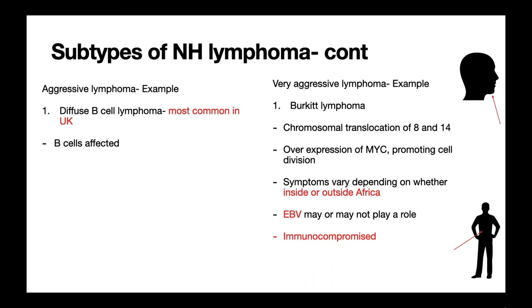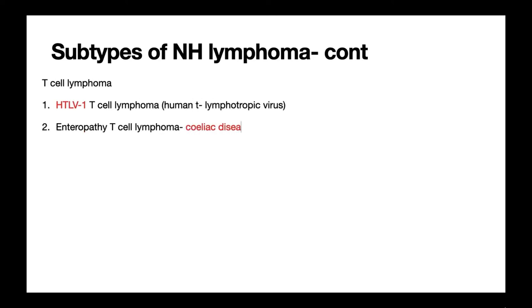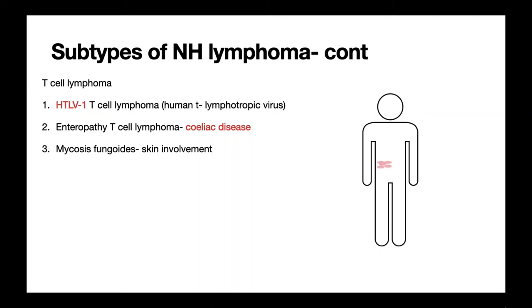Burkitt lymphoma is typically found in immunocompromised patients such as those with AIDS or HIV. Under the microscope it shows a characteristic starry sky appearance — an important exam point. Finally, the key T cell lymphomas to know are: HTLV-1 T cell lymphoma, caused by the human T-lymphotropic virus; enteropathy T cell lymphoma, associated with coeliac disease; and mycosis fungoides, which characteristically involves the skin, with patients typically presenting with discoid-shaped lesions.